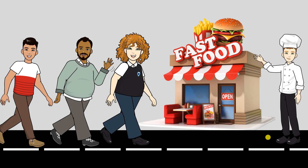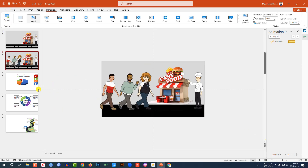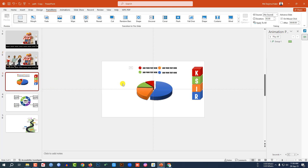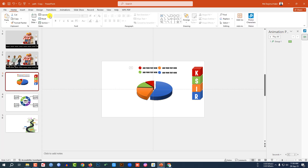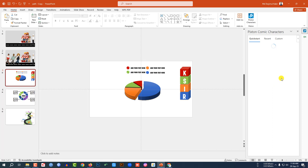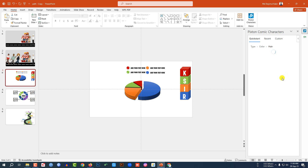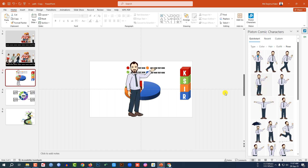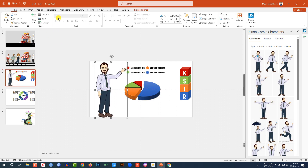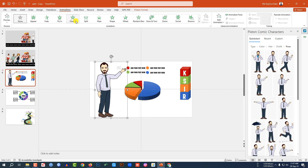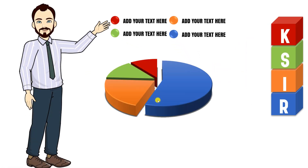This is perfect. If you want to add more cartoon characters according to your own statistics, use the same method. Go to Home, go to the Pixton character add-in, click Get Started, select a type, color, hair, and official outfit, select a pose, and place it. Go to Animation and add a Float In animation effect — it will look perfect. Let's watch the slide show — this is perfect.